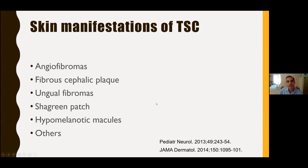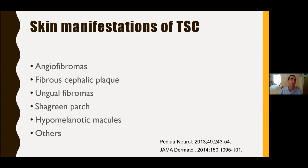These lesions are named partly based on where they occur. The angiofibromas are mostly on the face. The fibrocephalic plaque — that means it's on the head. Ungual fibromas means it's on the toes or the fingernails. Shagreen patch is on the lower back usually. And hypomelanotic macules can actually be anywhere on the body. When the hair is involved, it can cause white patches of hair.